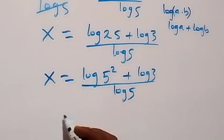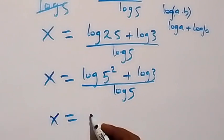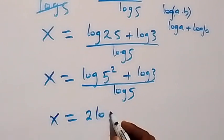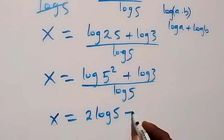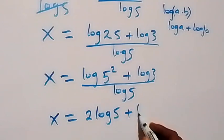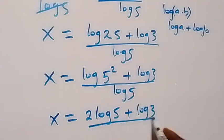Applying the log power rule again, we come back and have x now equals to 2 log 5 plus log 3, then over log 5.